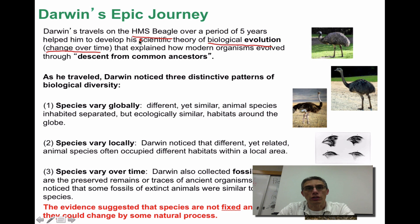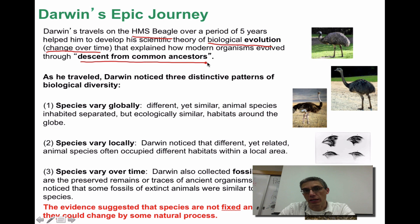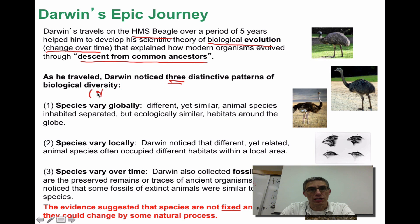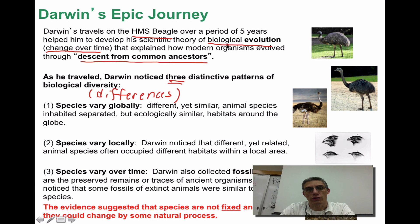His idea of biological evolution was used to explain how modern organisms — in other words, organisms we might see today — actually evolved through descent from a common ancestor. As he traveled, he noticed three distinct patterns of biological diversity. The idea of diversity basically means differences — differences he noticed in all the different organisms, both plants and animals, that he observed during his five years of travel.